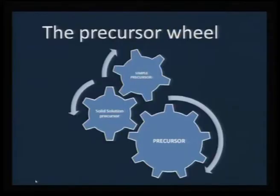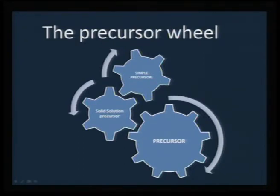Today, before I discuss more about simple precursors, I just want to touch on one more example to refresh our idea about solid solution precursors — just to recap the importance of that — and then we will look more into the simple precursor routes. This is the precursor wheel as I put it in simple form. A lot of precursors can be used to bring about metal oxide formation: one route is the solid solution precursor route, and another is the simple precursor route.